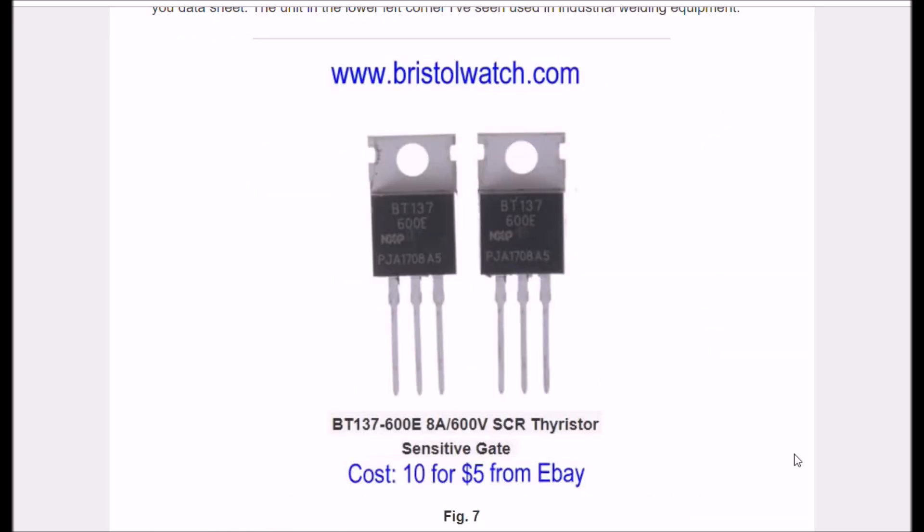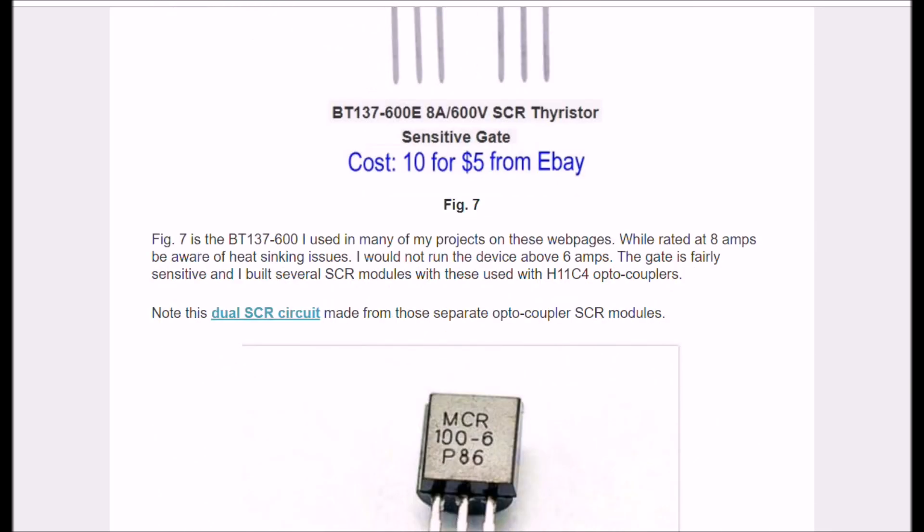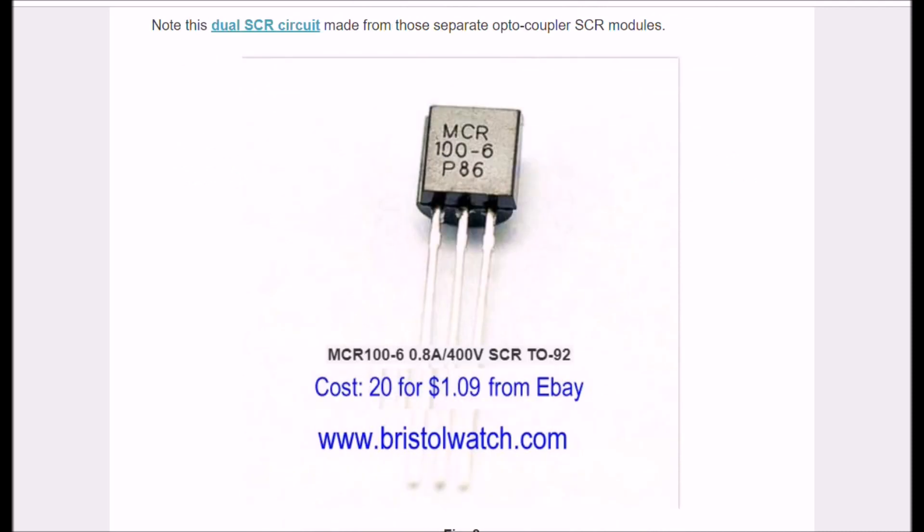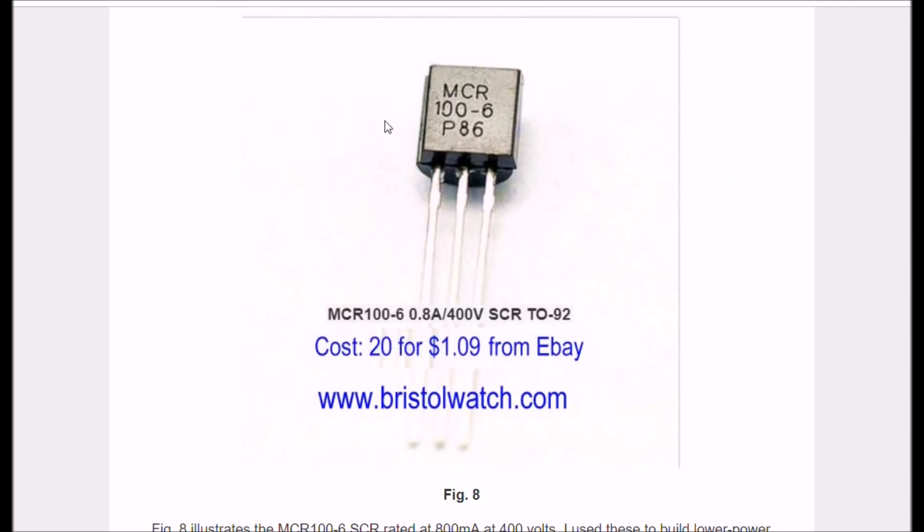For my test circuits I was using the BT137-600E. They are rated at 8 amps at 600 volts, so they can carry some pretty good power if properly heat-sinked. But when I'm developing a circuit, I want to keep things small, keep the voltages down and so forth until I get the circuit working. So most of my preliminary development work uses these little SCRs.